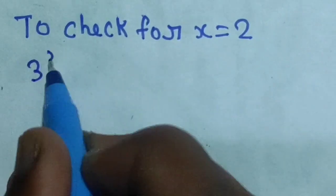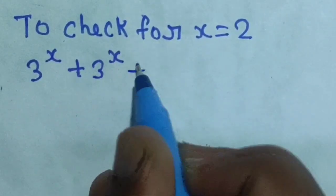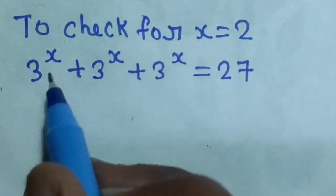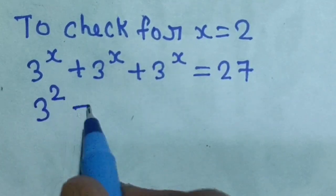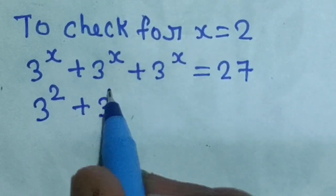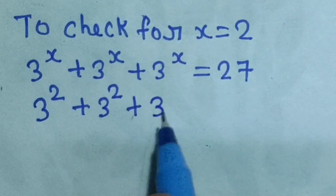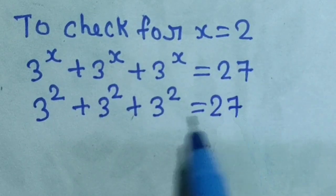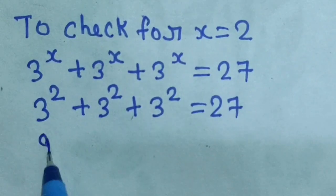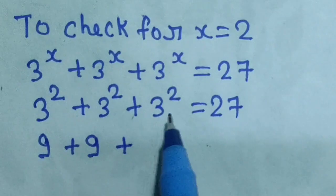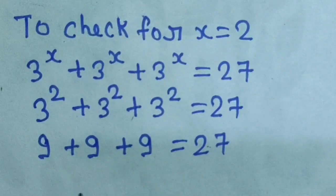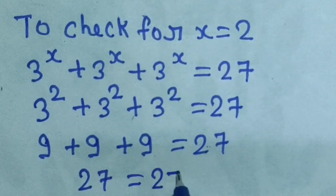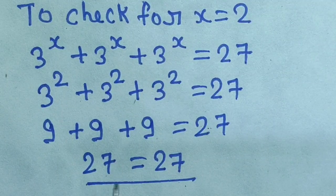Now let's check: substituting x equal to 2 into the equation gives 3 power 2 plus 3 power 2 plus 3 power 2, which is 9 plus 9 plus 9, that means 27 equal to 27. Left hand side equals right hand side, so our final answer is x equal to 2.